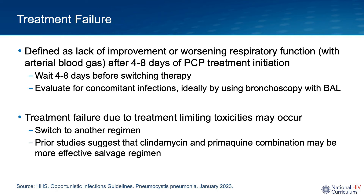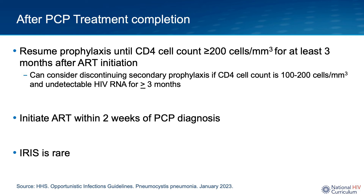Treatment failure can also occur due to drug toxicities, in which case you can switch to an alternative regimen. Prior studies suggest the clindamycin-primaquine regimen is considered the most effective salvage PCP treatment regimen. Once a patient completes a full course of treatment, PCP prophylaxis can be started and continued until the patient is on combination antiretroviral therapy with a sustained CD4 count rise to 200 or greater for at least three months. Prophylaxis can be considered for discontinuation in individuals with a CD4 between 100 and 200, provided they are on ART with viral suppression for at least three to six months. ART can typically be started within two weeks of PCP diagnosis; immune reconstitution syndrome to PCP is unusual.